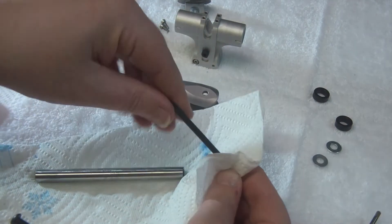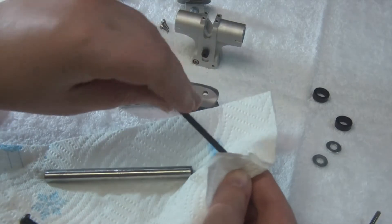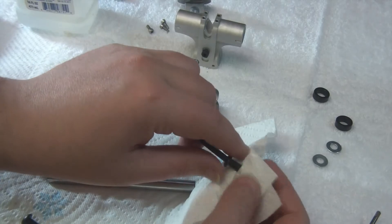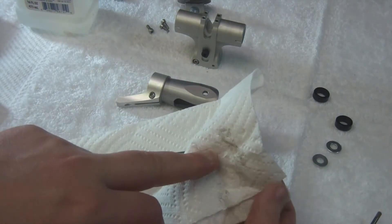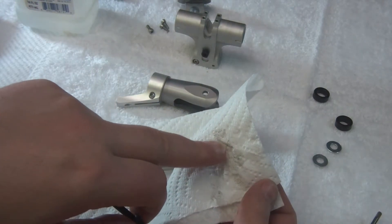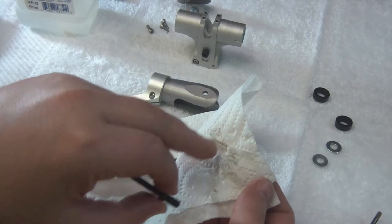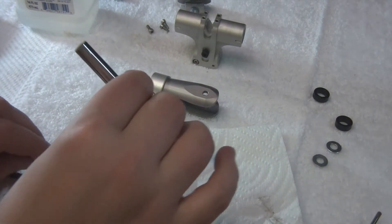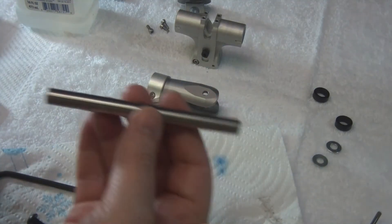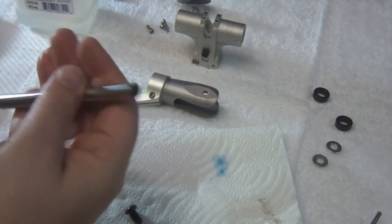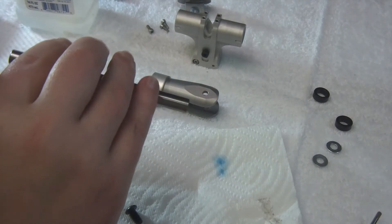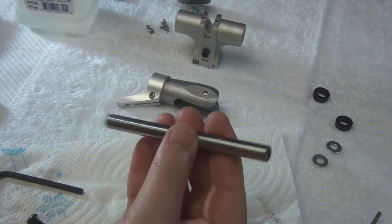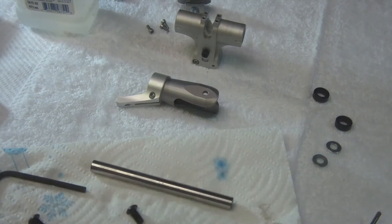You want to actually wipe off the threads afterwards and you can see the oil and dirt that got carried away, loosened up from the alcohol. Then I just take some compressed air to clean out the inside of that.